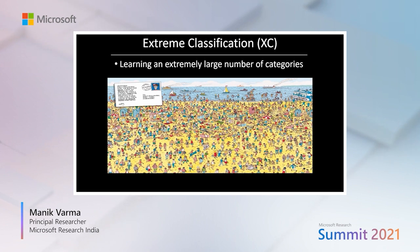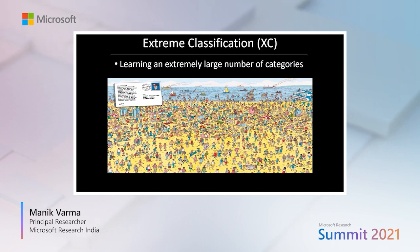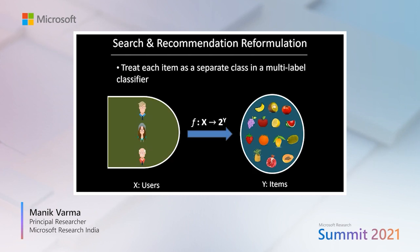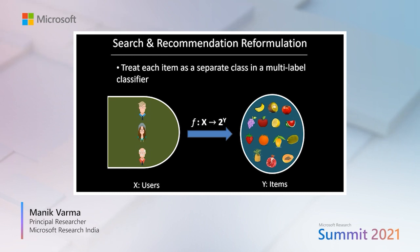The reason that extreme classification is so exciting is because it not only allows us to tackle web-scale classification problems in diverse domains ranging from computer vision to natural language processing, but because it has also opened a new paradigm for thinking about key applications in large-scale search and recommendation. In fact, many high-impact applications in search and recommendation can be reformulated as classification tasks by simply treating each item to be ranked or recommended as a separate class in a multi-label classifier.